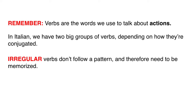We have done two irregular verbs: essere and avere — to be and to have. You had to memorize them word by word. Io sono, tu sei, lui/lei è, noi siamo, voi siete, loro sono — that's not following a pattern, you just memorize it. Same thing with avere: io ho, tu hai — no pattern, just memorize.